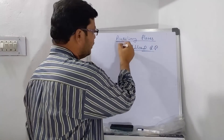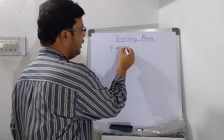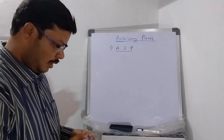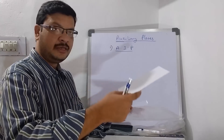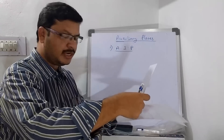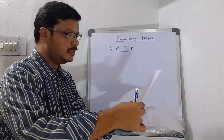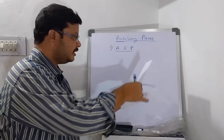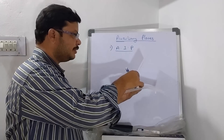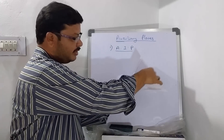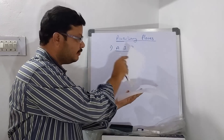Auxiliary planes are classified into two types. The first one is the auxiliary inclined plane, which we will call AIP. The auxiliary inclined plane means if this is your horizontal plane, then the plane which is inclined to HP and perpendicular to VP. If you observe, this is inclined only to HP and perpendicular to VP. This is called the auxiliary inclined plane. As it is perpendicular to VP, we get a new reference line with respect to VP and this auxiliary plane, which we call X1Y1.